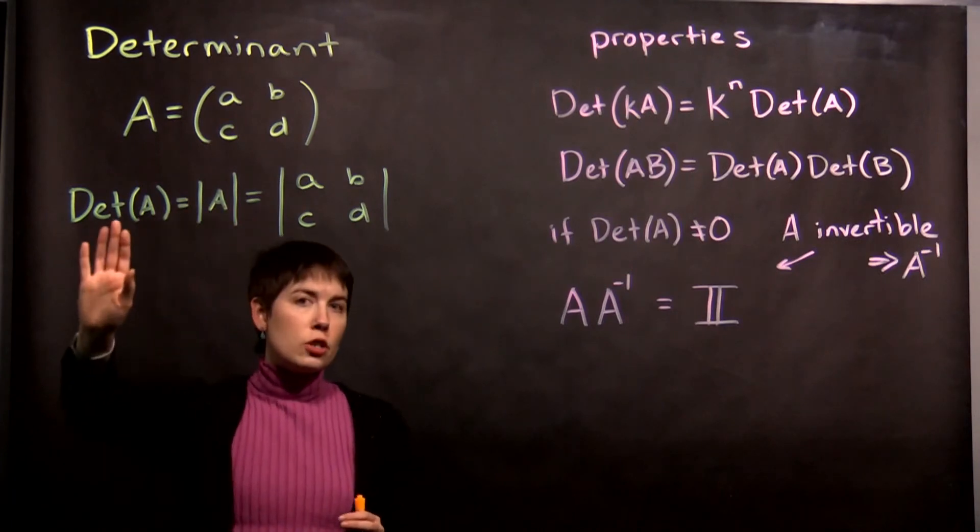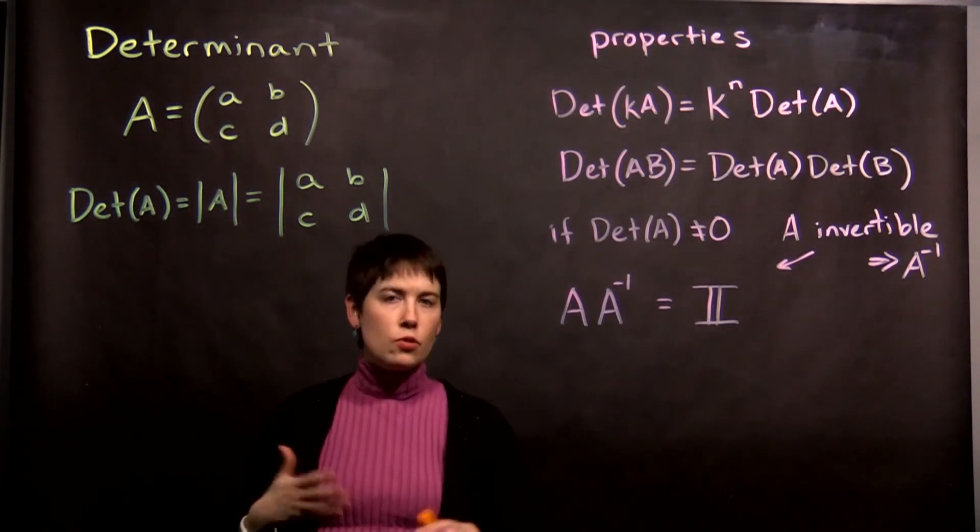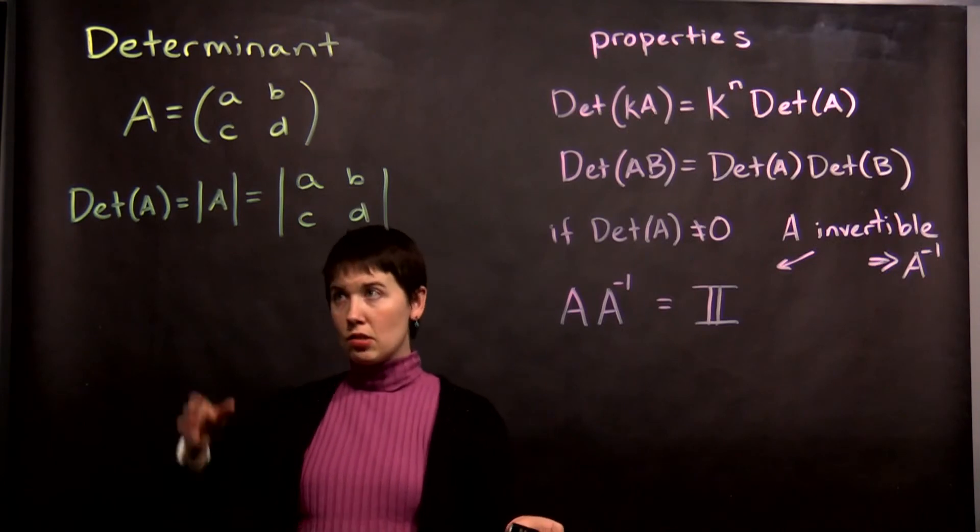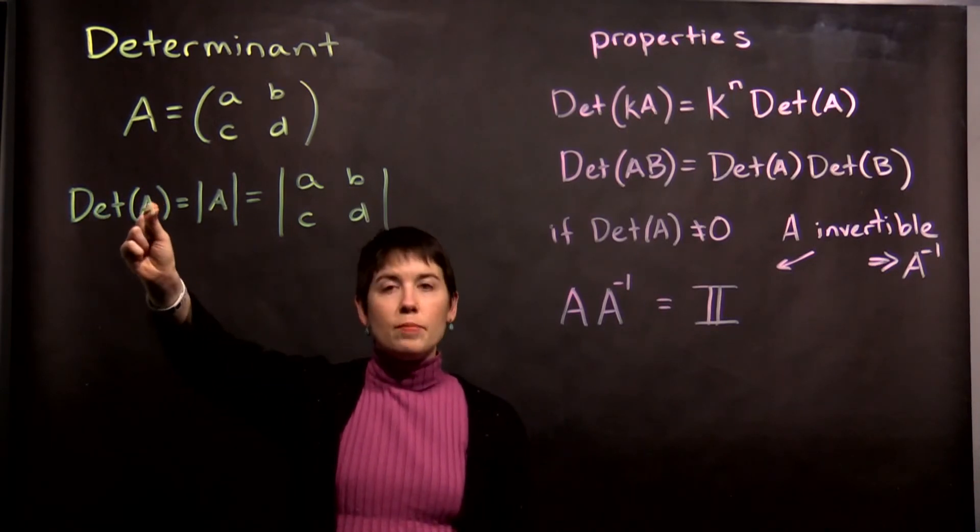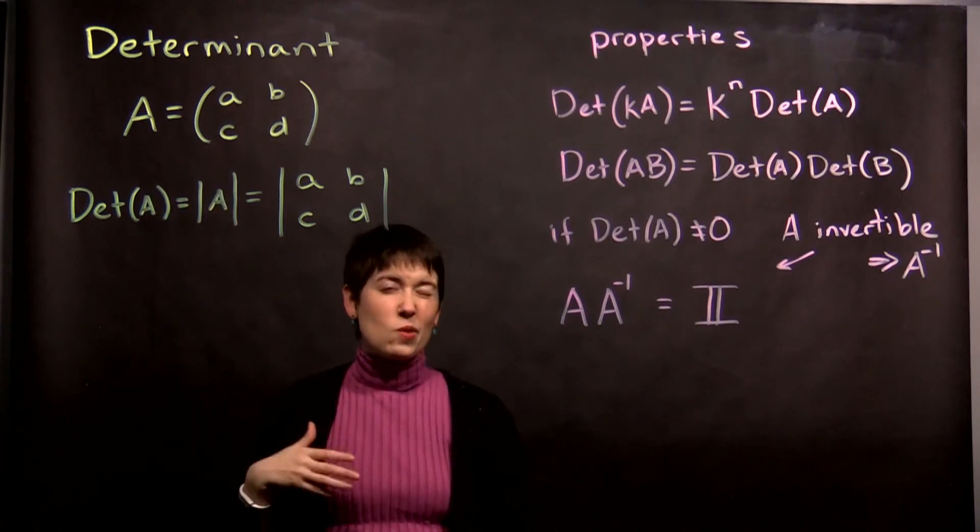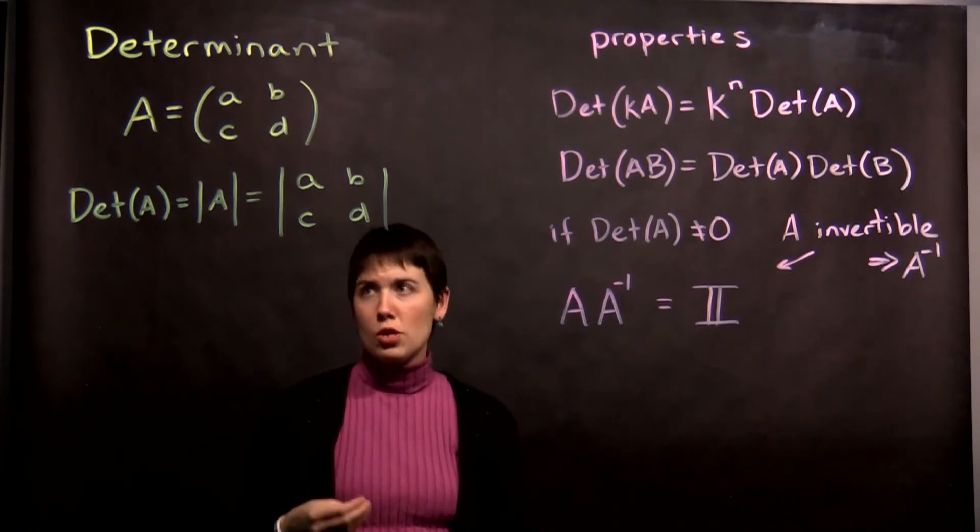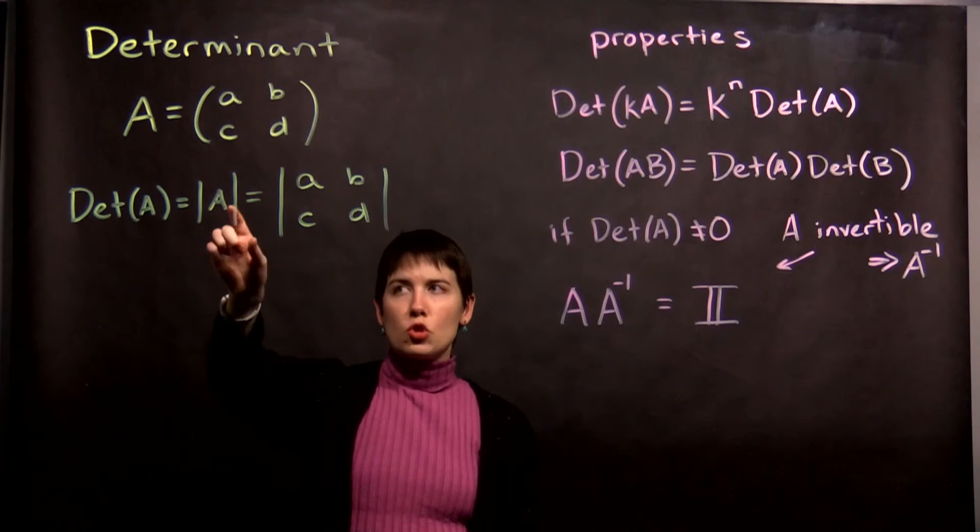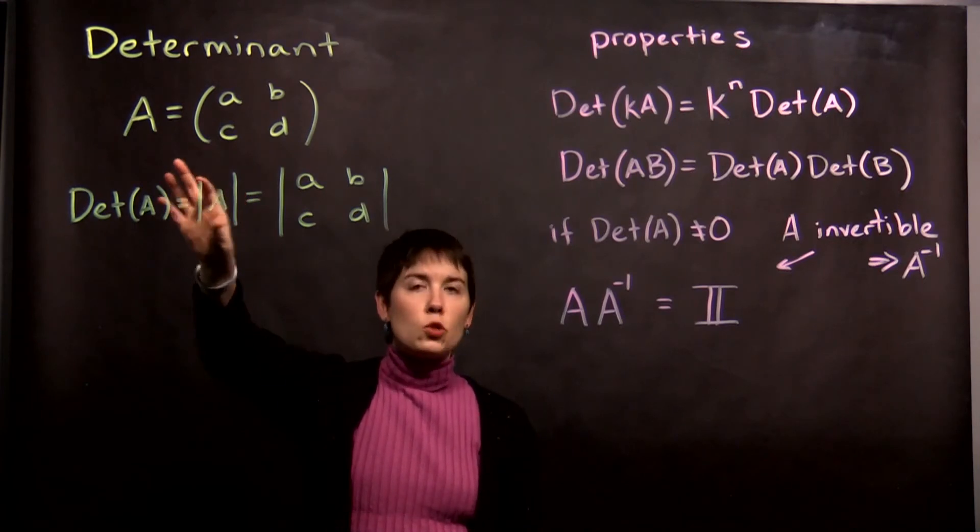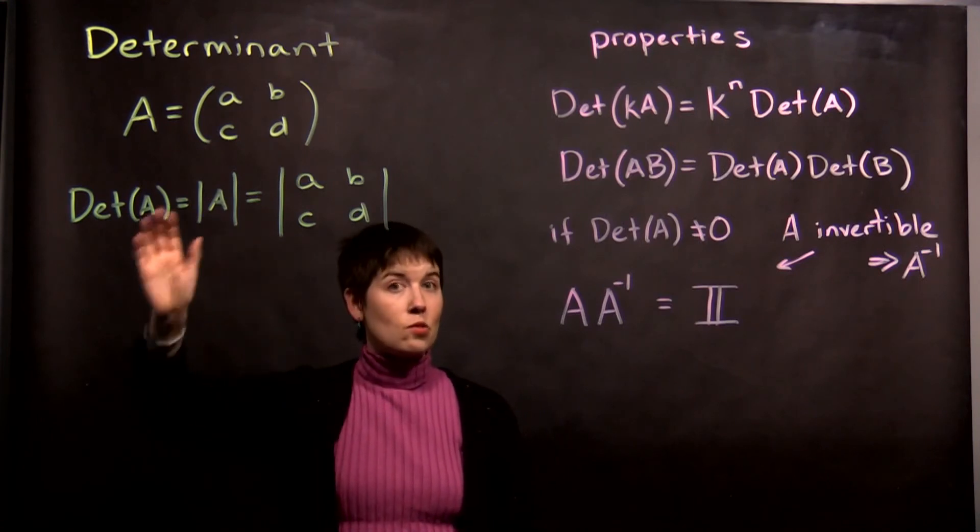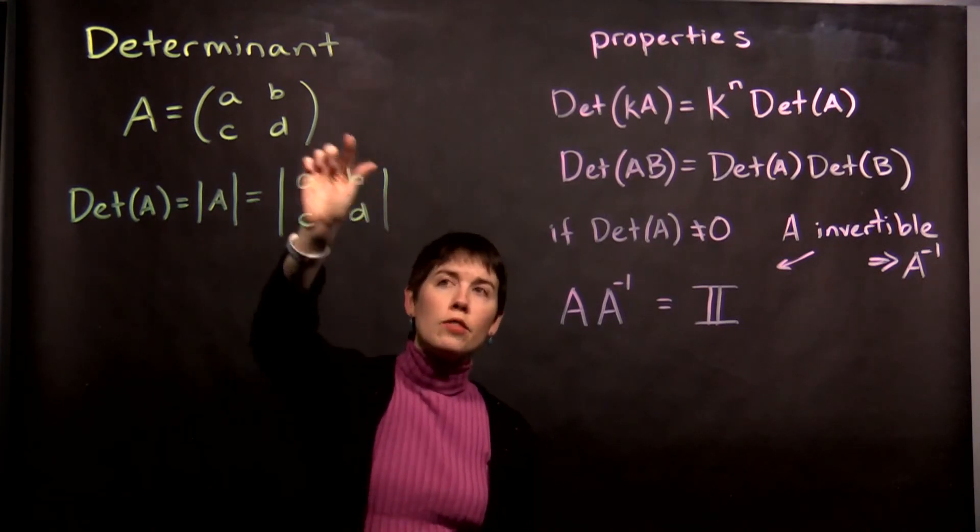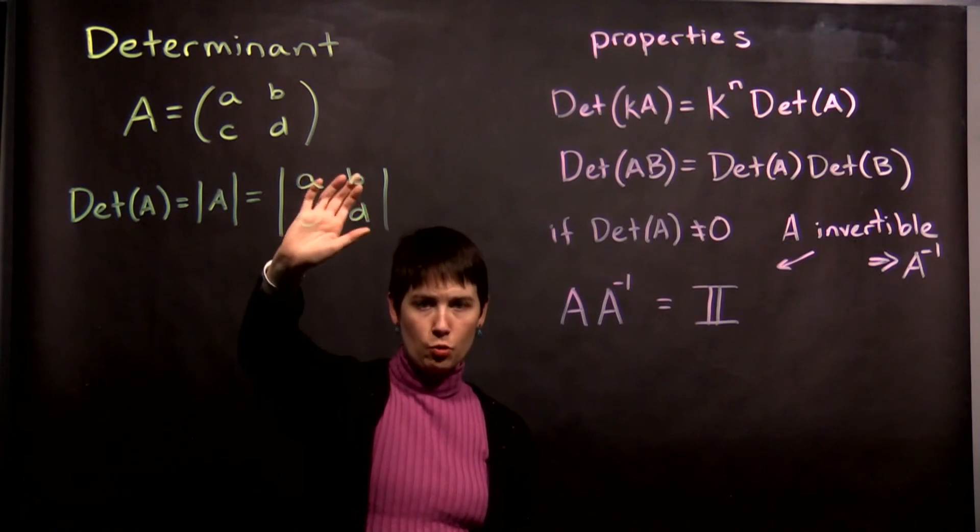There's three different notations you might see. I might use them or you might find them in other places. So det, writing out D-E-T, and then the matrix is one method. I think it's the most clear, especially if this is new to you. A second form is just putting the matrix between two bars. So that looks like calculating the magnitude of the matrix, but in this case it's the determinant. Maybe you write the matrix itself between two bars.